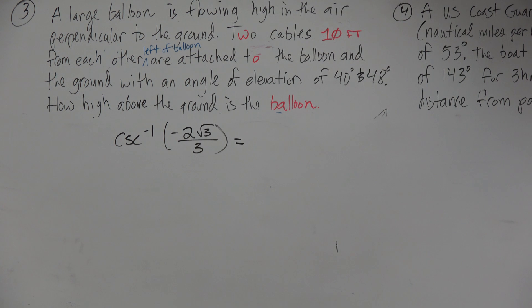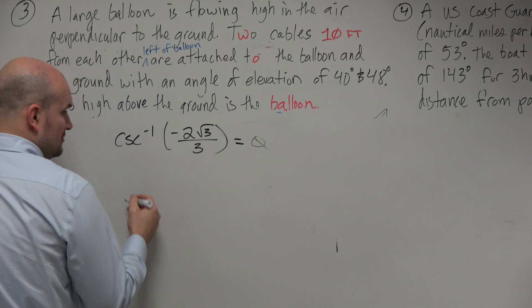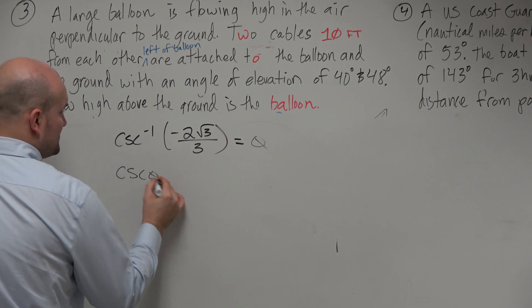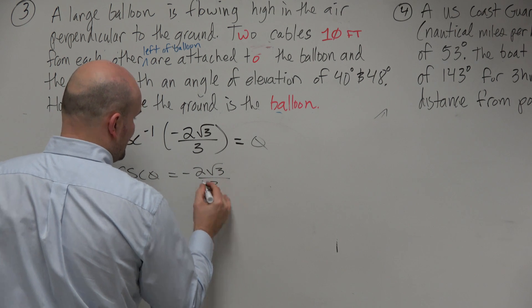We can rewrite this. We can rewrite this as we're trying to find an angle. So we can say cosecant of some angle equals negative 2 square root of 3 over 3.